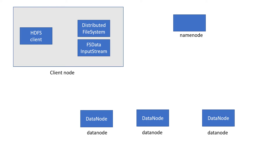Let's say the client is initiating a read operation. The HDFS client will talk to the Distributed File System — it will open a connection, and the Distributed File System will connect with the NameNode. It will then get validated whether the client has enough permission for reading or not. Those kinds of validations will get performed.